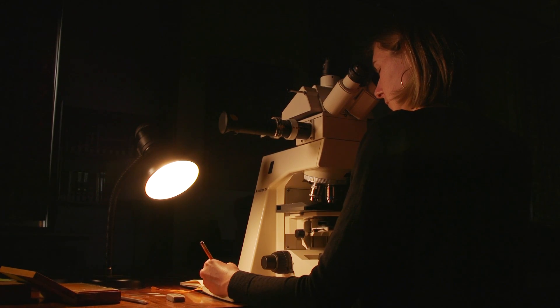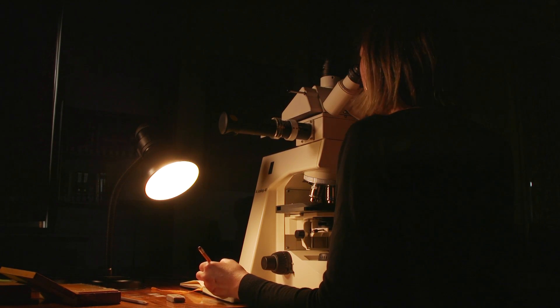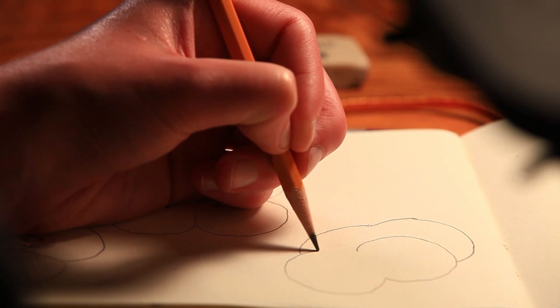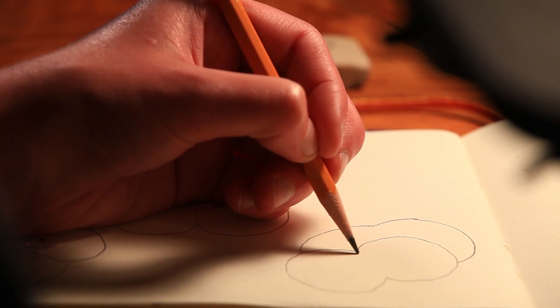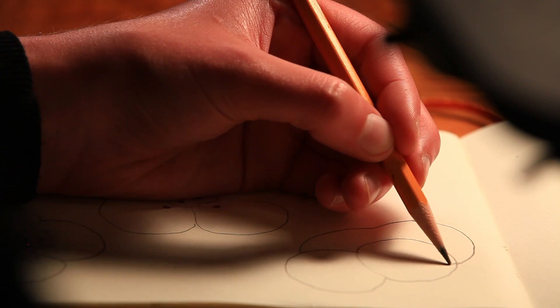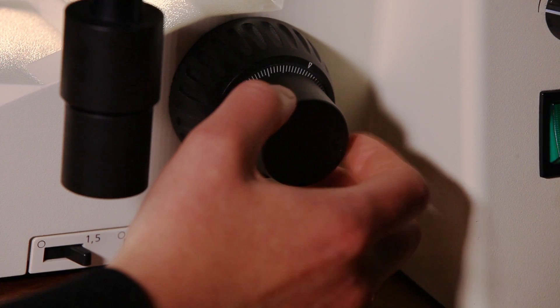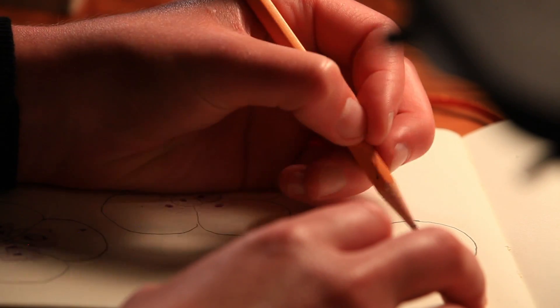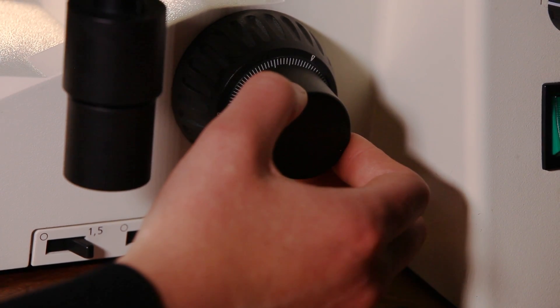But one challenge is that embryos are three-dimensional. And with this device, a person can only focus on one slice of the embryo at a time. "And so what Conklin had to do with the camera lucida is he would get one plane of focus, and then he would sketch that plane. He would shift the focus, sketch another plane directly on top of the sketch that he had just made. He would shift the focus again, sketch another plane."